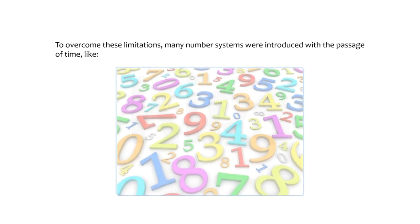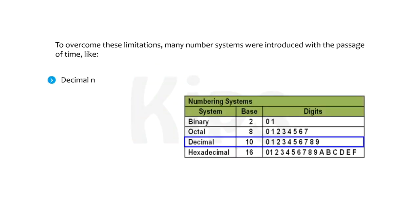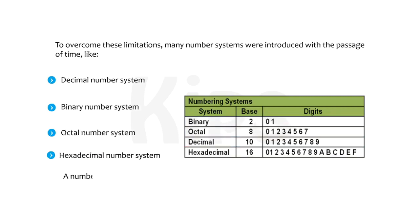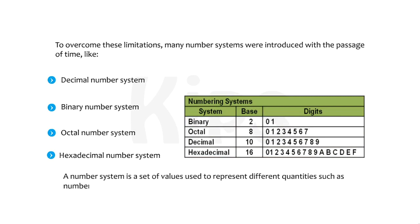Number systems introduced include the decimal number system, binary number system, octal number system, and hexadecimal number system. A number system is a set of values used to represent different quantities such as number of students in a class or number of viewers watching a particular show, etc.